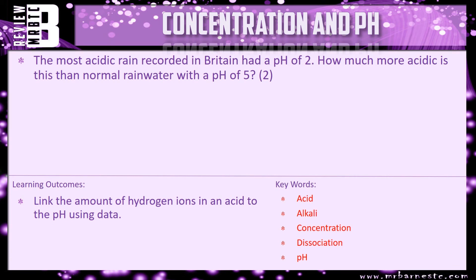Okay, that pretty much brings this video to a close. There is a review question for you here, which says: the most acidic rain recorded in Britain had a pH of 2. How much more acidic is this than the normal rainwater with a pH of 5? Have a go at that, and that's this video at an end. Hopefully it's helped.